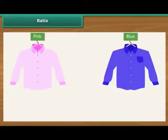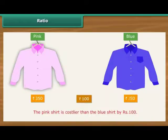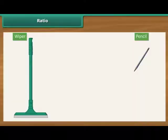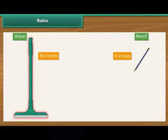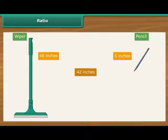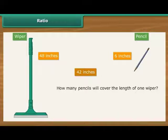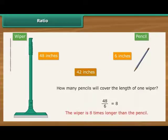Similarly, suppose Ritu buys two shirts, one pink and the other blue, costing Rs. 350 and Rs. 250 respectively. We say that the pink shirt is costlier than the blue one by Rs. 100. Comparison by difference does not make sense when we compare quantities or values that are wide apart. For example, suppose we compare a 6 inch long pencil with a 48 inches long wiper. The wiper is 42 inches longer than the pencil. However, the difference does not bring out clearly the extent of variation in the lengths of the wiper and the pencil. How many pencils will cover the length of one wiper? The answer is 48 divided by 6, that is 8. In other words, the wiper is 8 times longer than the pencil.